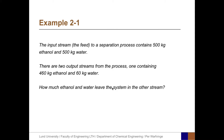Let's start with Example 2.1. The input stream, the feed to a separation process, contains 500 kg of ethanol and 500 kg of water. There are two output streams from the process, one containing 460 kg of ethanol and 60 kg of water. How much ethanol and water leave the system in the other stream?